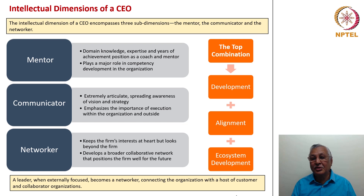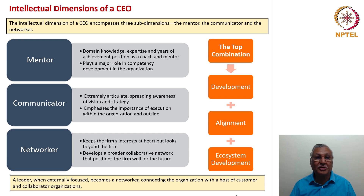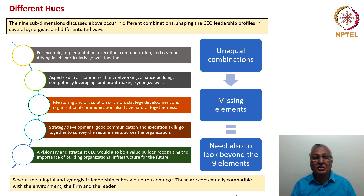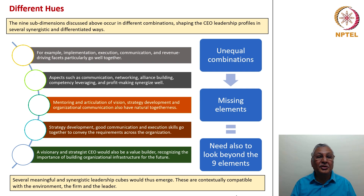A leader, when externally focused, becomes a networker connecting the organization with a host of customer and collaborator organizations — in fact, connecting the organization with the entire spectrum of external stakeholders. There tend to be different hues for each of these dimensions and sub-dimensions. Therefore, CEO leadership profiles under the broad canopy of performance leadership could substantially vary. For example, implementation, execution, communication and revenue-driving facets particularly go well together, and a thoroughly execution-oriented CEO looks for these synergistic combinations.